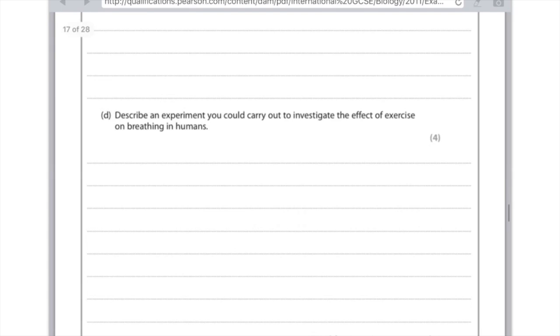Describe an experiment you could carry out to investigate the effect of exercise on breathing in humans. I don't like these questions. But what you could do is you could do a mixture of resting and exercising. You could count how many breaths you took over a certain amount of time. And then you want to obviously repeat it to improve the reliability of this. And you should specify what kind of exercise you intend to do. Whether it's press-ups or jogging. So you want to do a comparison between resting and exercising. You want to count the number of breaths over a certain amount of time like 30 seconds. You want to specify the type of exercise. And lastly, repeat.